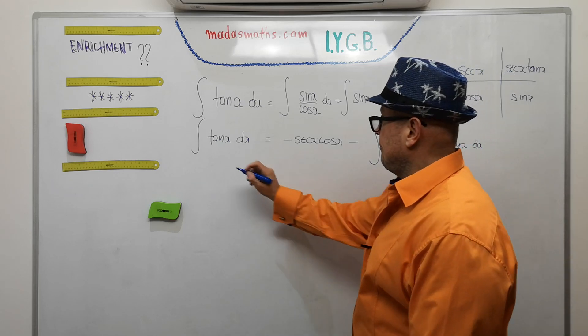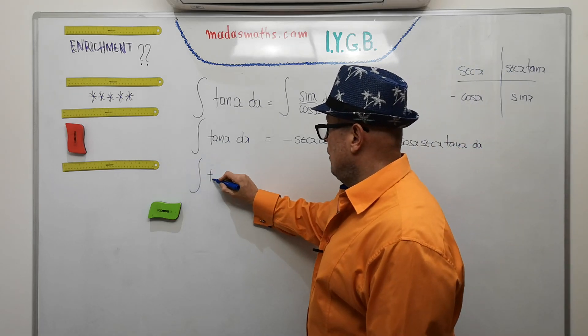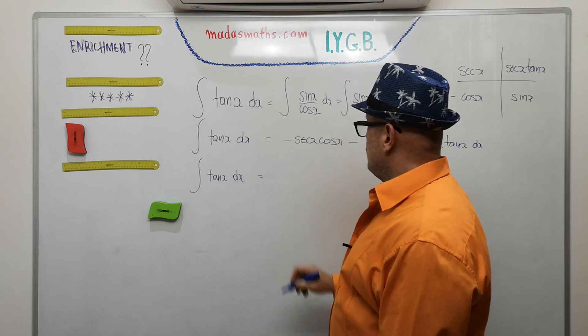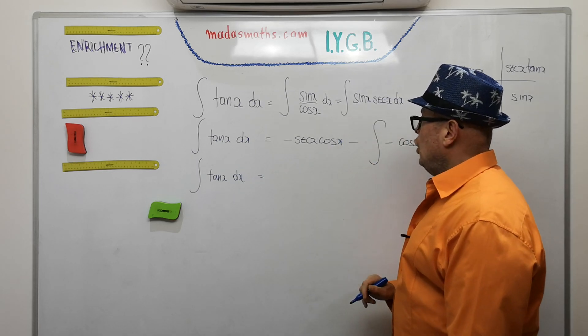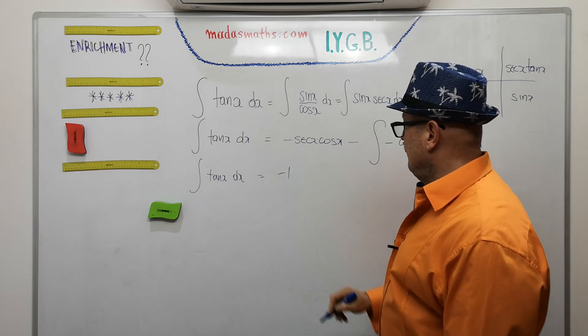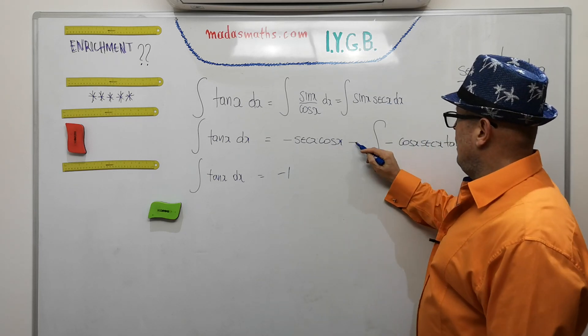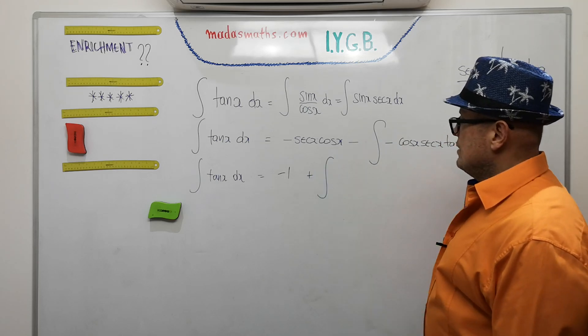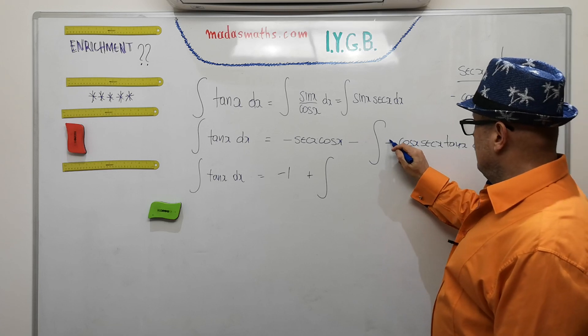Let's do a little bit of tidying. Let's go to the next line. The tan of x dx is equal to—sec times cos is of course 1, and that's a minus 1. This minus and a minus will make it a plus, the bit inside the integral, and then that has gone now.